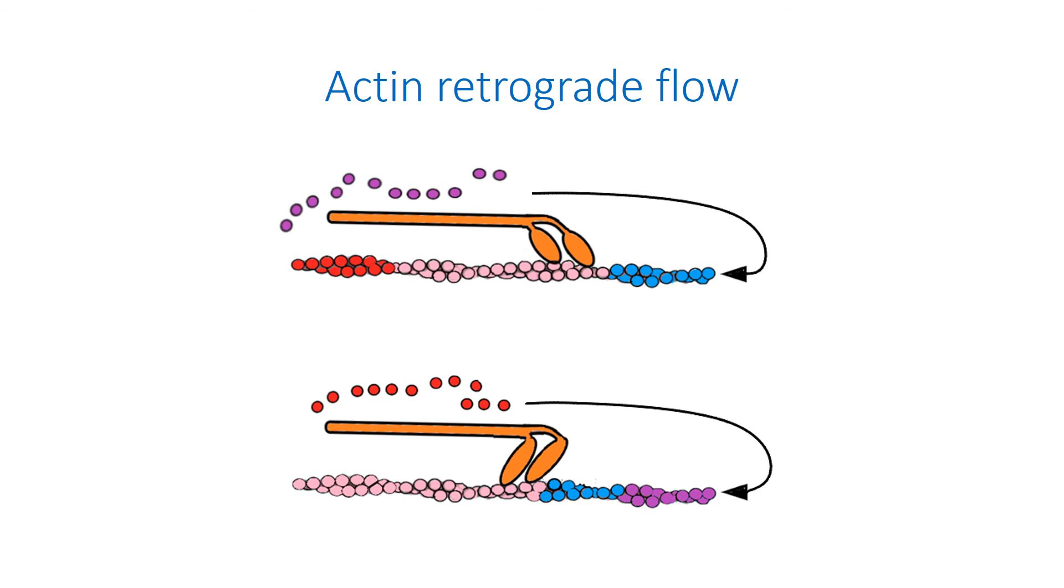The barbed or plus ends of the F-actin filaments are oriented towards the cell membrane of the growth cone, while their pointed or minus ends are directed towards the central domain. In the stationary state of the growth cone, continuous polymerization occurs at the plus ends and depolymerization at the minus ends. Free actin subunits are recycled back to the plus ends. It is accompanied by translocation of the F-actin filaments in the direction of the central domain, which is ensured by non-muscle myosin-2. This process is called actin retrograde flow.